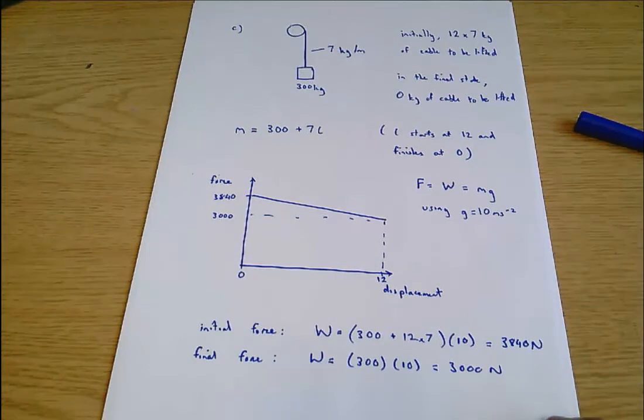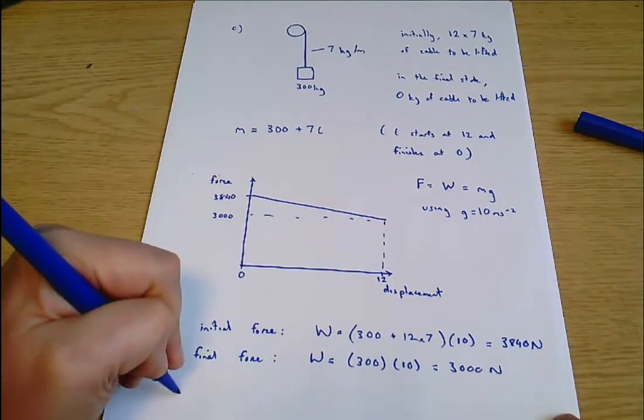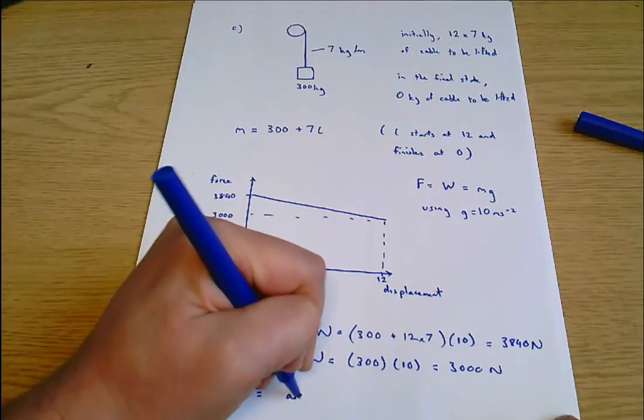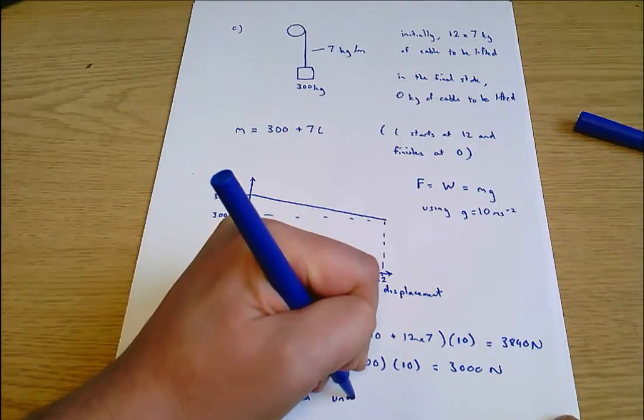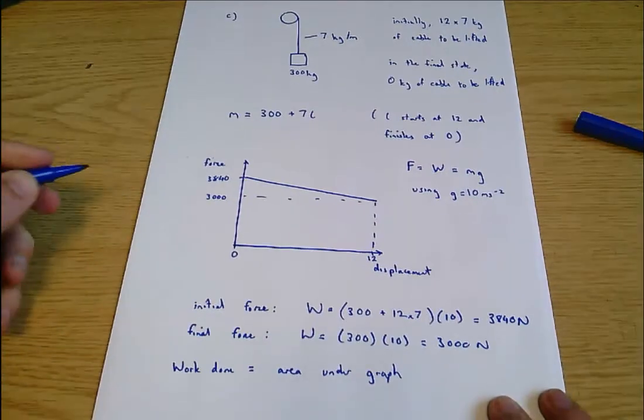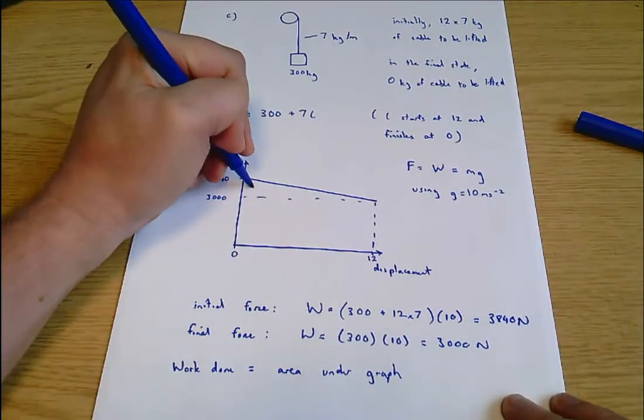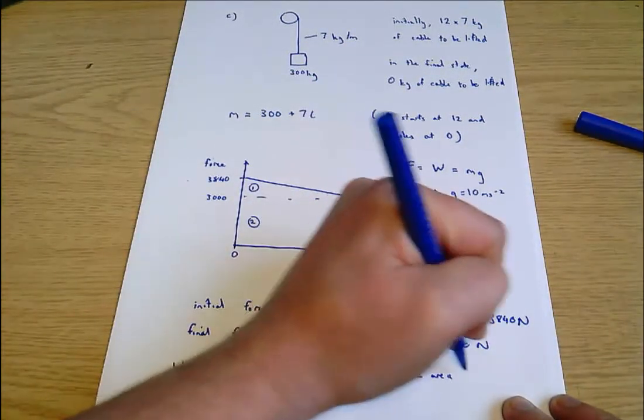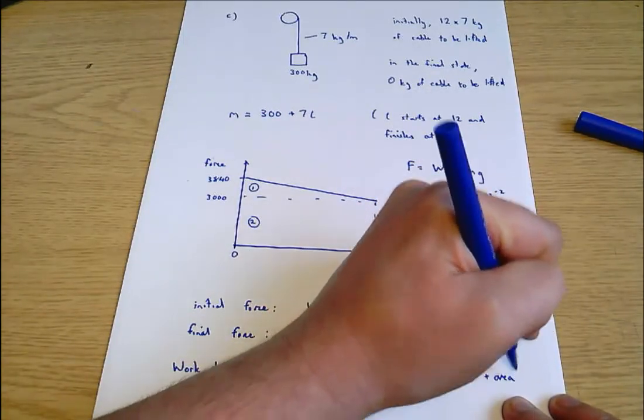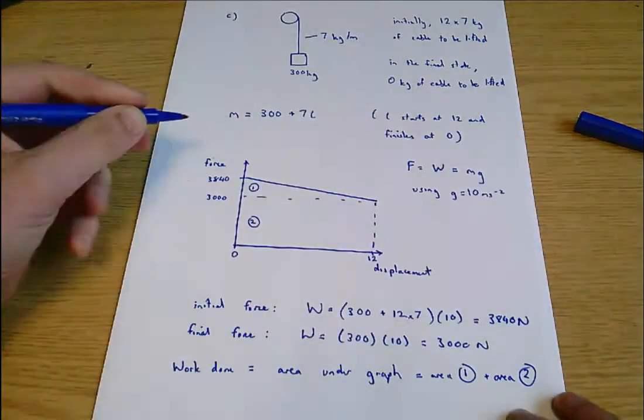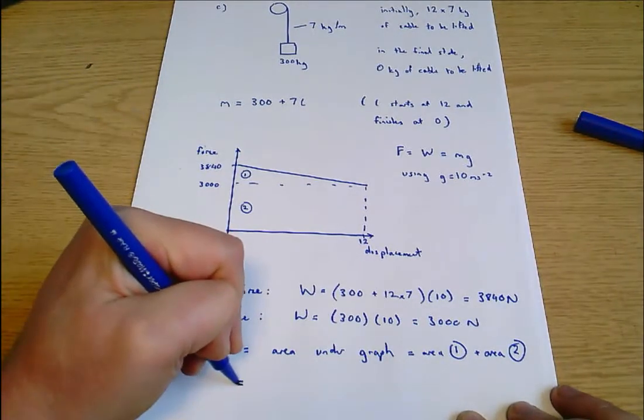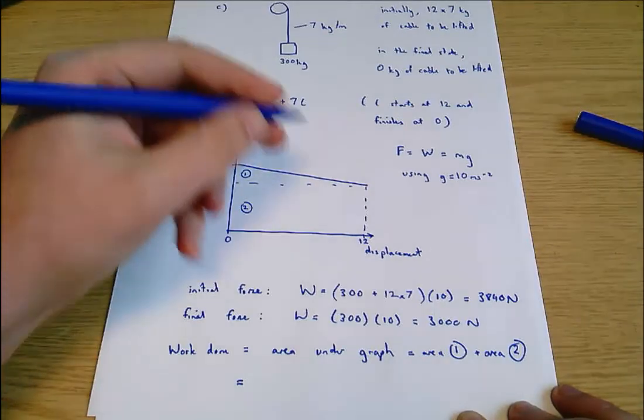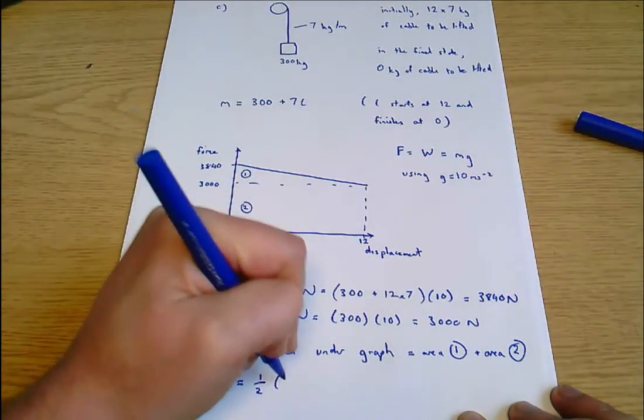That's the force that must be transmitted through the cable as it's reeled in from zero to 12 meters. The final thing that I need to know is that the work done is the area under the graph. That is, if I call that one and that two, area one plus area two.